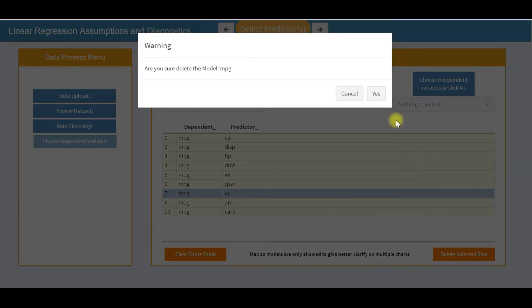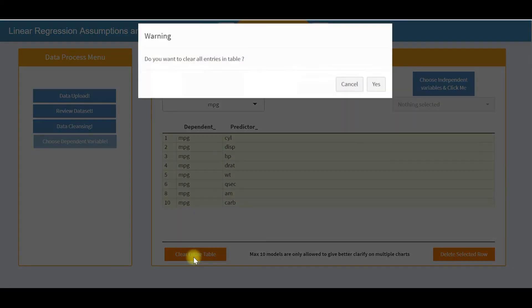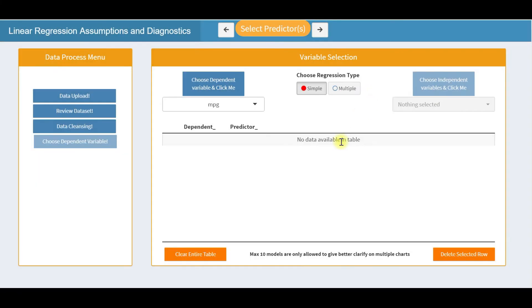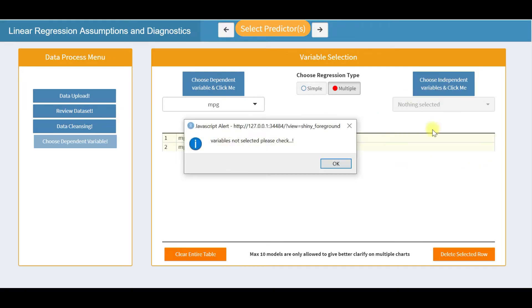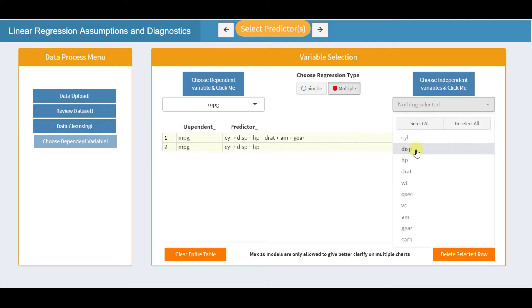Alternatively, if you choose multiple and select independent variables, you will see a single line entry on the table, meaning multiple regression model created. Please note that you have the option to add only a maximum of 10 models. This is mainly to facilitate a clear view when we generate multiple charts. You will see options to delete row by row from the model table and also to clear the entire table are provided.